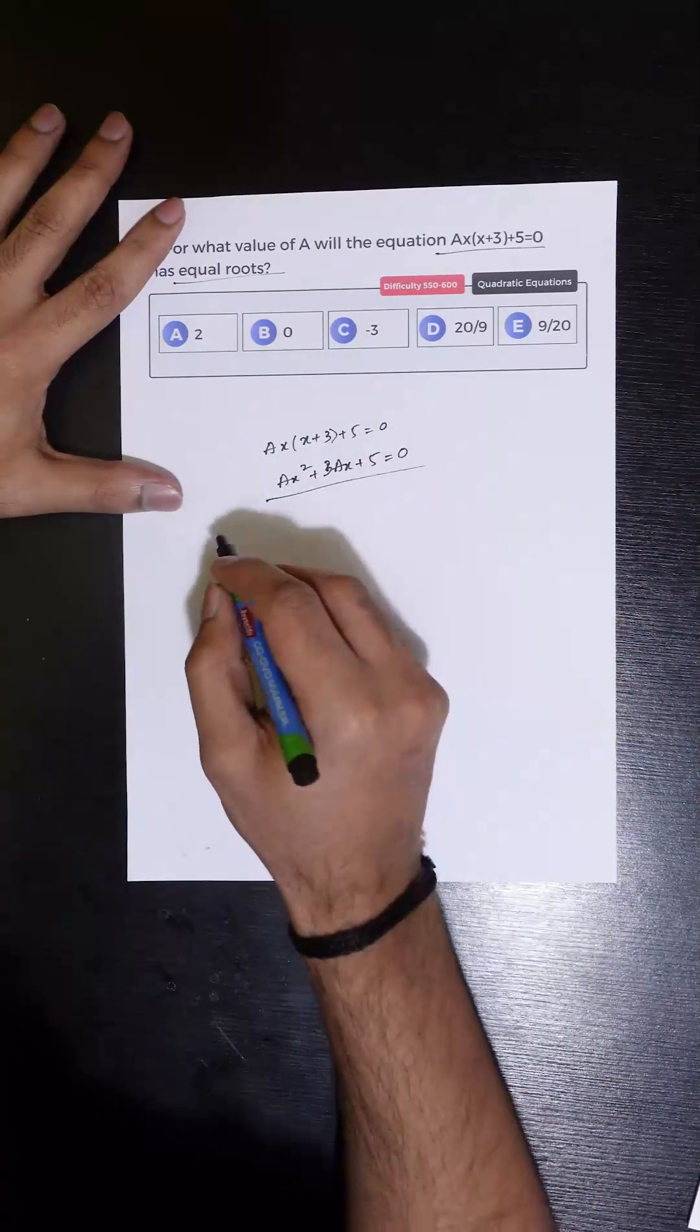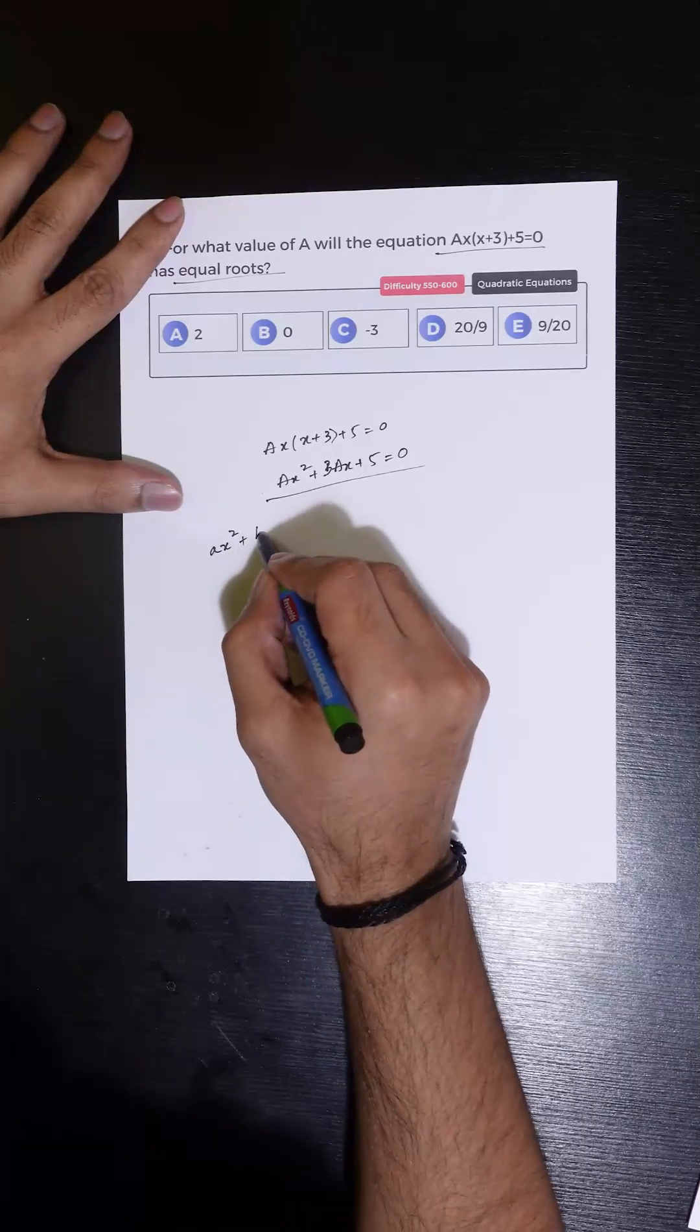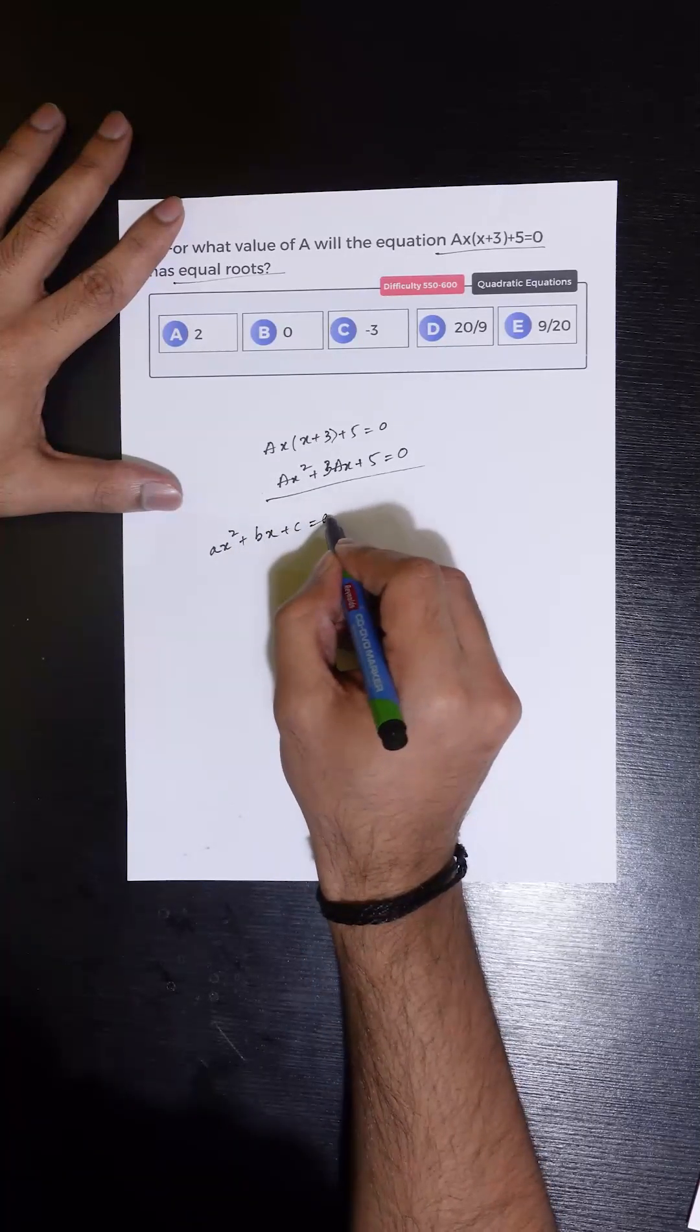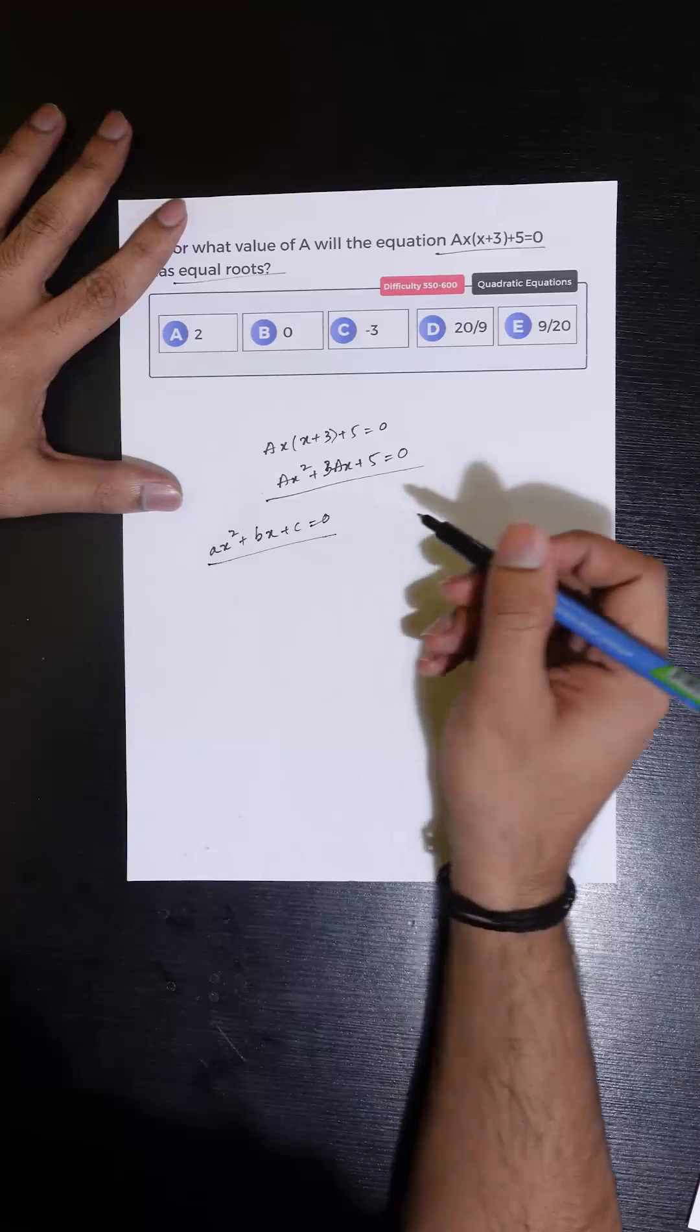If we take a look at this, this is a quadratic equation. When a quadratic equation is of the form Ax² + Bx + C = 0,